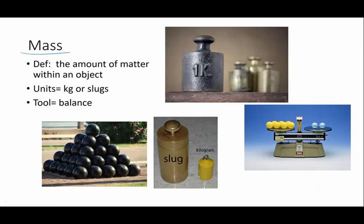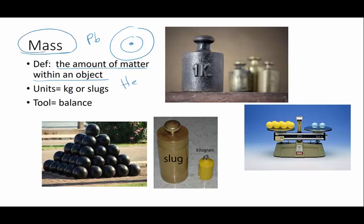Now mass is the amount of matter within an object. It has to do with the atoms. If the atoms are tightly bound together and they're very dense, you can have something like lead. If the atoms are more fluffy, you can have things that are low density like helium. But mass is always measured in kilograms. And that's the metric unit.